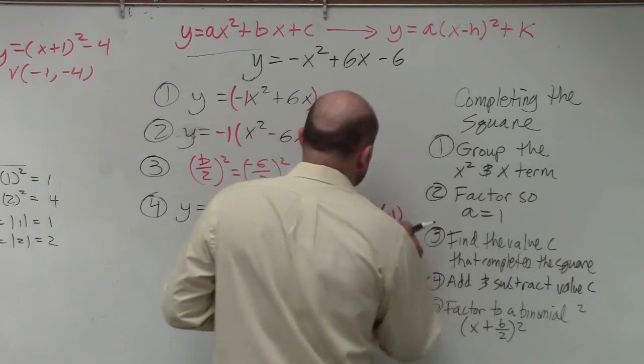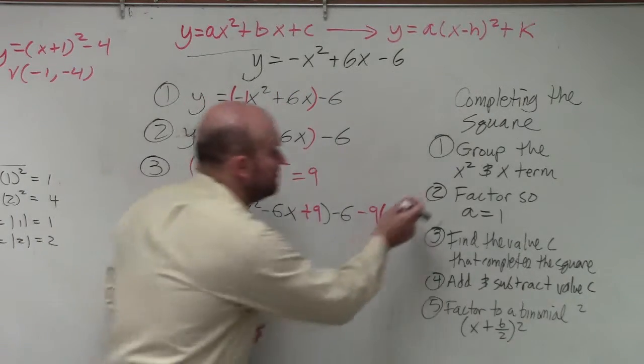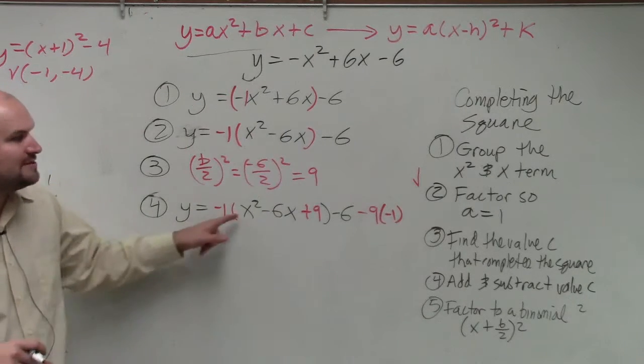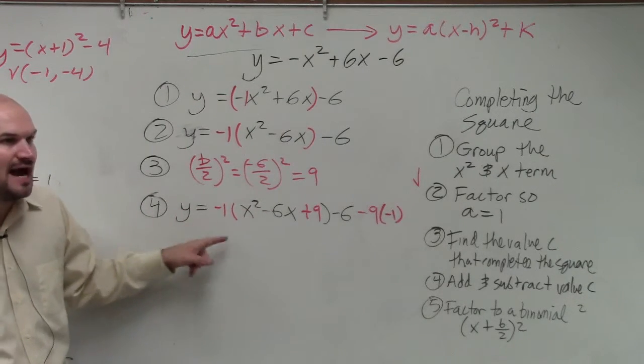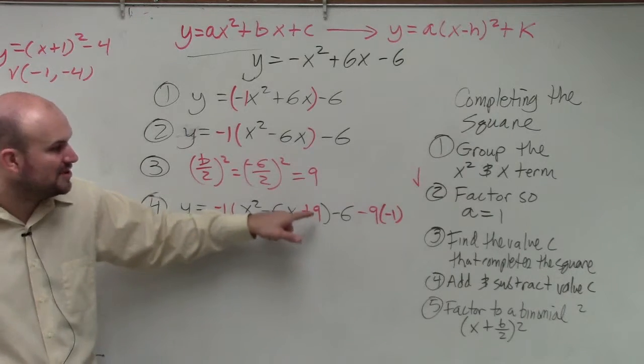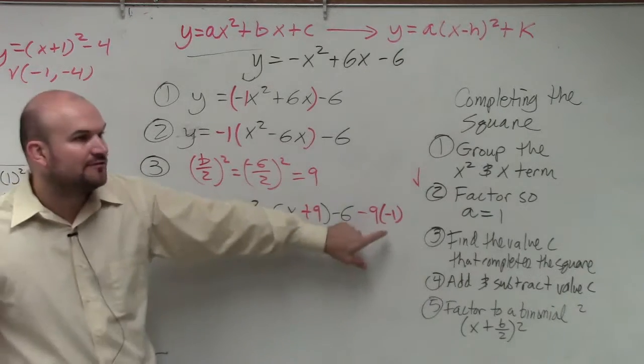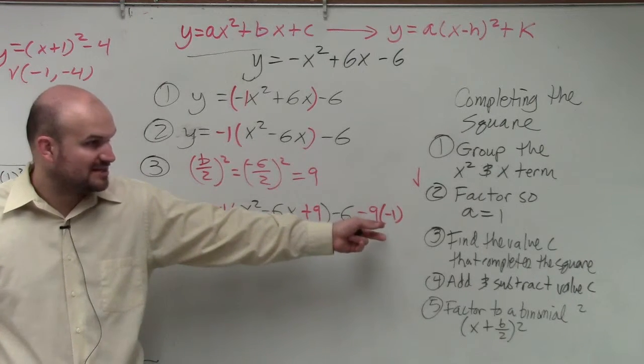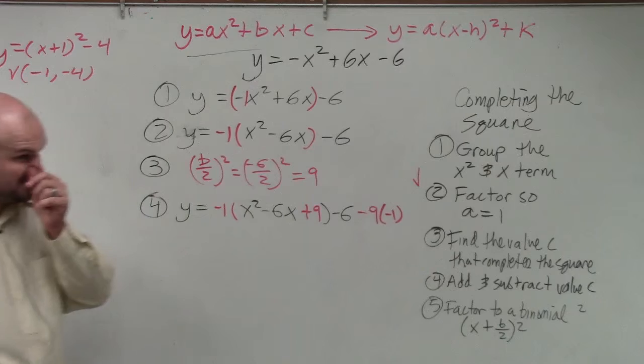So if you factor out a number, meaning if you do step number 2, you have to make sure whatever number you factored out, that that number that you add is being multiplied by that number. So therefore, when you subtract the number, you also have to multiply it. Does that make sense?